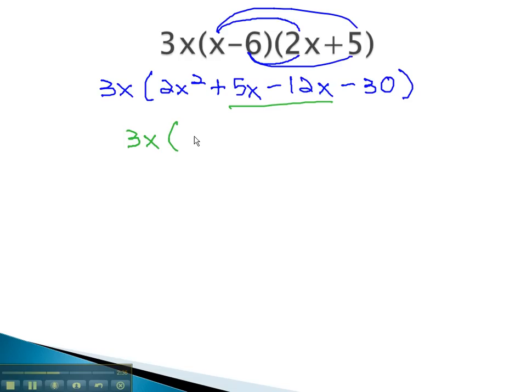We now have 3x times 2x squared, minus 7x, minus 30.